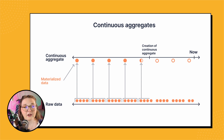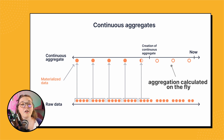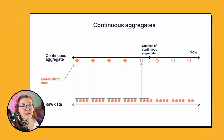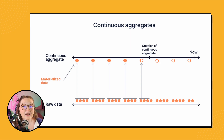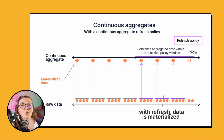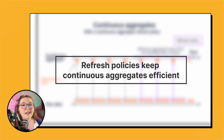That's why you have to create an automatic refresh policy to materialize all of that new data for you. When you query your continuous aggregate, TimescaleDB by default will run an on-the-fly aggregation of any unmaterialized data, so you may not notice that your new data is not being materialized. But when you have a lot of unmaterialized data, querying from your continuous aggregate will slow down significantly. So you want to make sure you have that automatic refresh policy so that your aggregated data stays materialized and up to date as new data comes in.